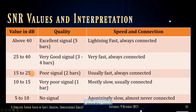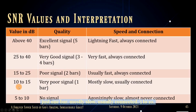At 15 to 25 decibels, that is a poor signal — only 2 bars, usually fast but always connected. At 10 to 15, very poor signal, just 1 bar, mostly slow but usually connected. At the worst range, 5 to 10 decibels, there is essentially no signal — agonizingly slow, almost never connected.